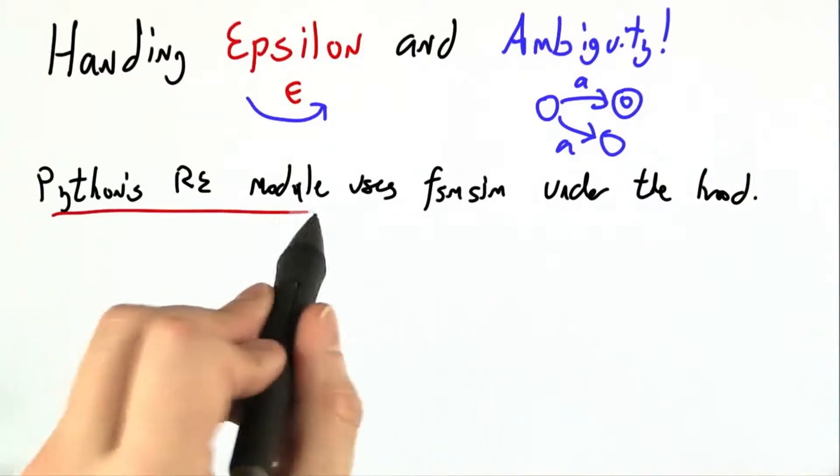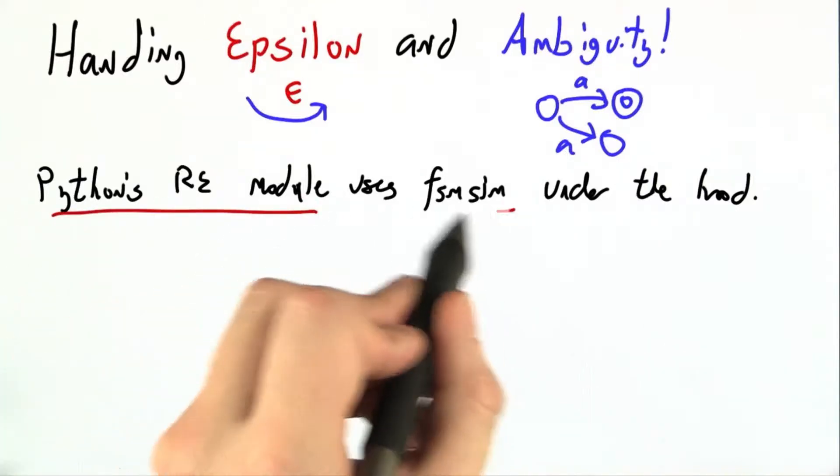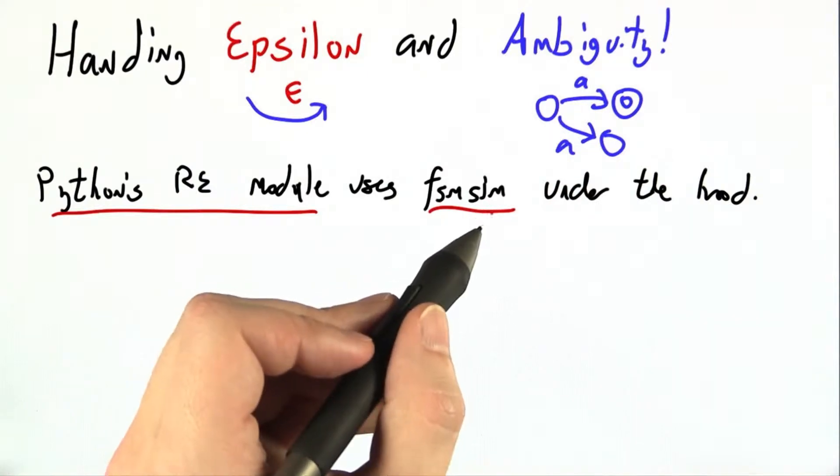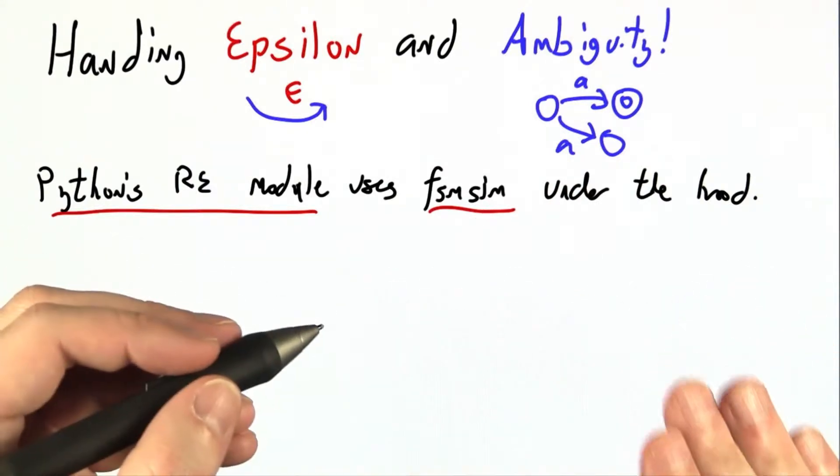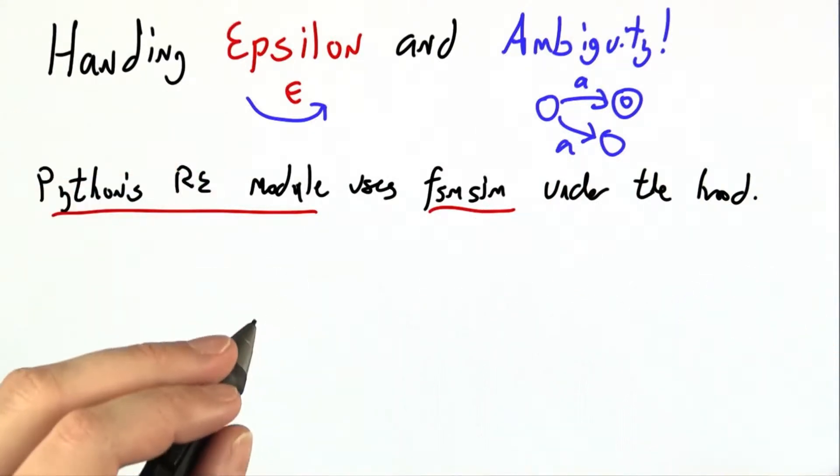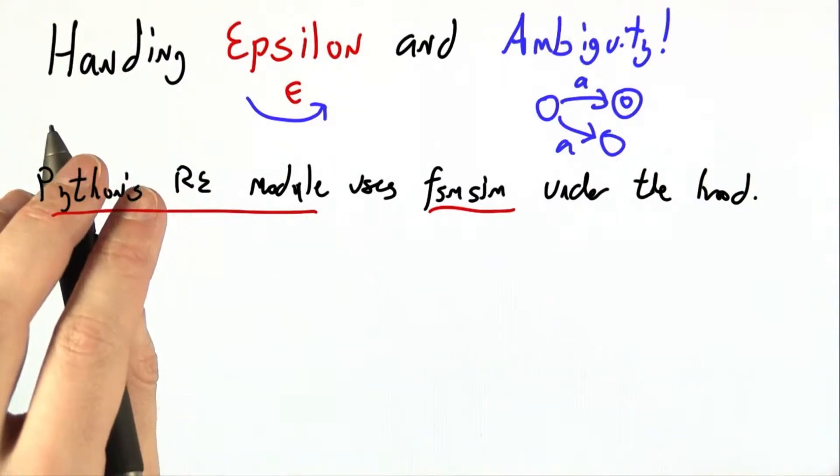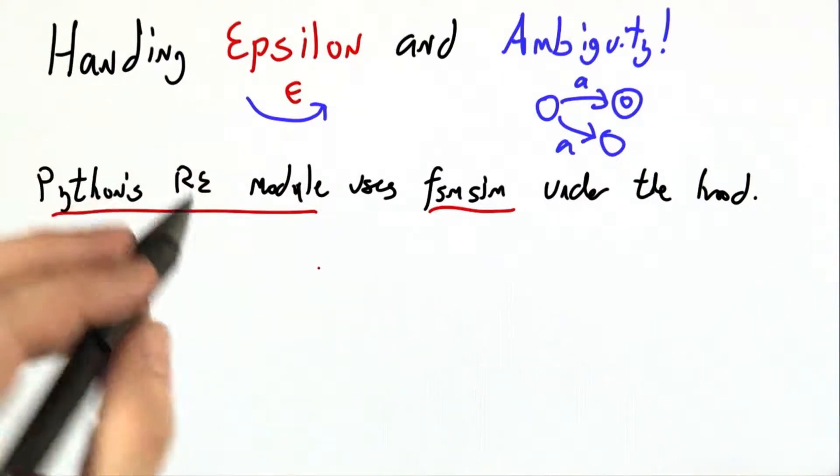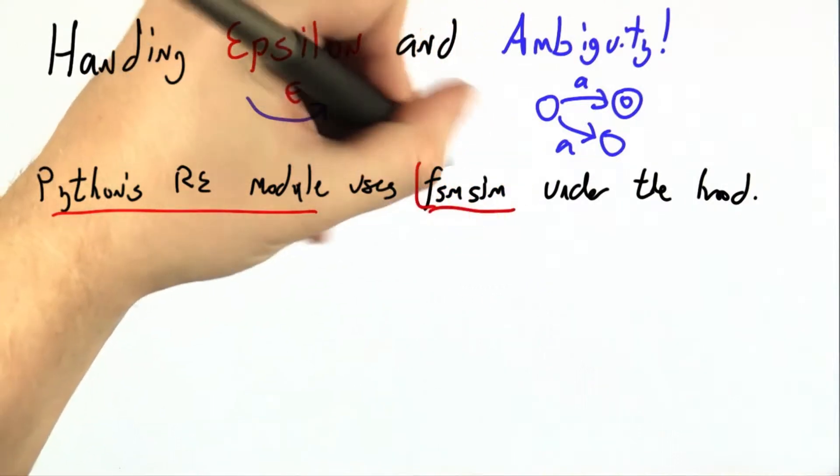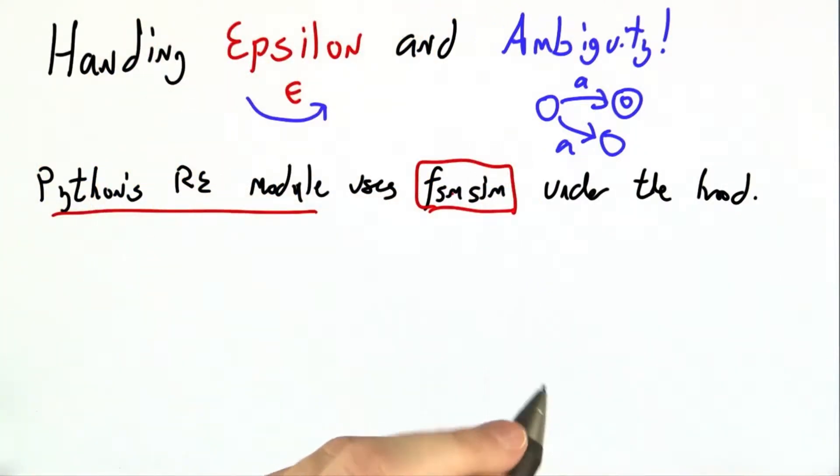It turns out that Python's regular expression module actually uses something very similar to FSM sim under the hood. You just take the regular expression, turn it into a finite state machine, which you've done forwards and backwards many times, and then check with a simple recursive procedure to see if the finite state machine accepts a string.